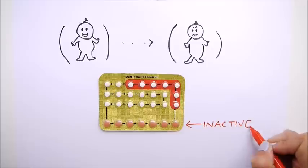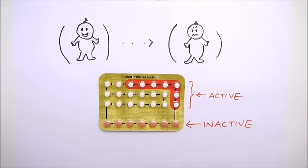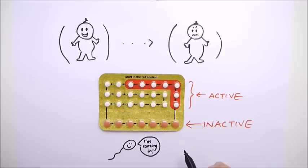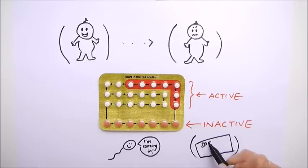The combined pill usually has seven inactive or sugar pills which lets your body get rid of that endometrial lining which is why you get a light period during these pills. The mini pill just makes the cervix a not very nice place to be if you're a sperm.